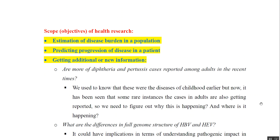Now let us talk about the scope or objectives of health research. First is estimation of disease burden in a population — we can know exactly what the prevalence of any disease is. Second, we can predict the progression of disease in a patient. Third, we can obtain additional or new information. For example, more diphtheria and pertussis cases are now being reported among adults. We used to know this was a disease of childhood, but now rare instances of adult cases are being reported, and we need to figure out why and where this is happening.